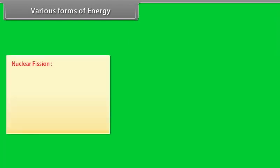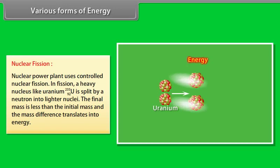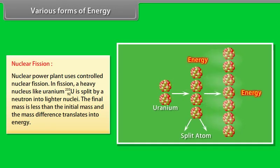Nuclear fission: Nuclear power plant uses controlled nuclear fission. In fission, a heavy nucleus like uranium 23592 is split by a neutron into lighter nuclei. The final mass is less than the initial mass, and the mass difference translates into energy.